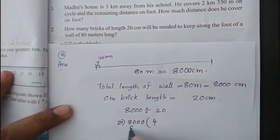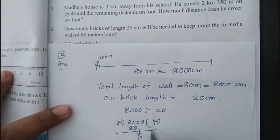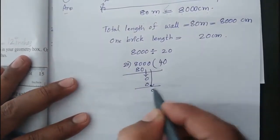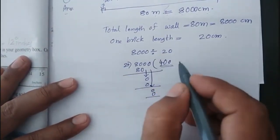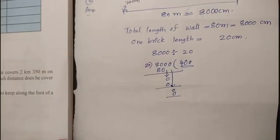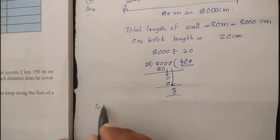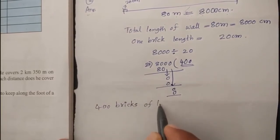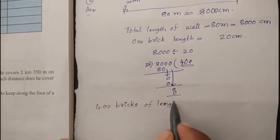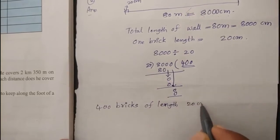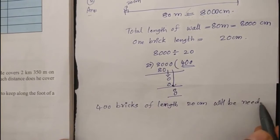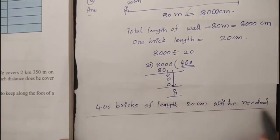8000 divided by 20 equals 400. So 400 bricks of length 20 centimeters will be needed. This is the answer of the second question.